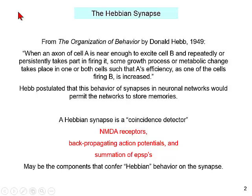We would now call a Hebbian synapse a coincidence detector — that two events occur at the same time, the presynaptic axon and the postsynaptic cell, A and B. We know that in many cases the coincidence detector is NMDA receptors, backpropagating action potentials into dendrites, and summation of excitatory postsynaptic potentials — all of which were just being discovered. These are the components that confer Hebbian behavior on the synapse.